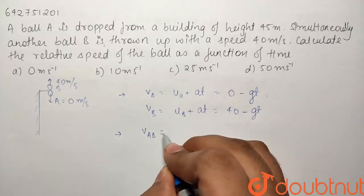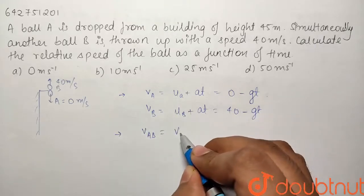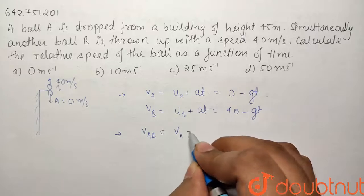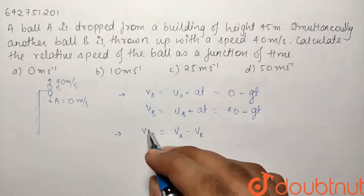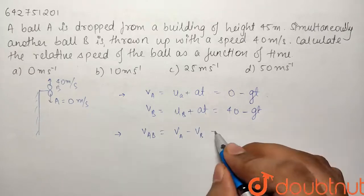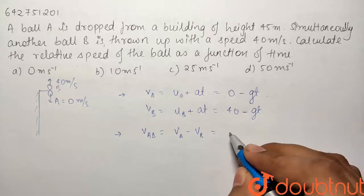So if I talk about the relative velocity, we know relative velocity Vab will be equal to Va minus Vb and we have to find out the time dependency of this term. So this will be equal to Va minus Vb. What is Va?